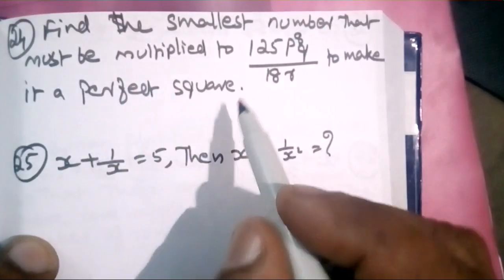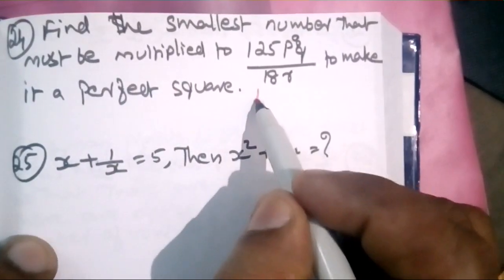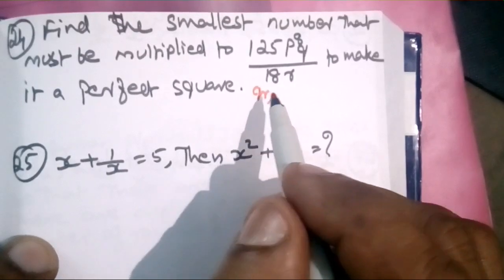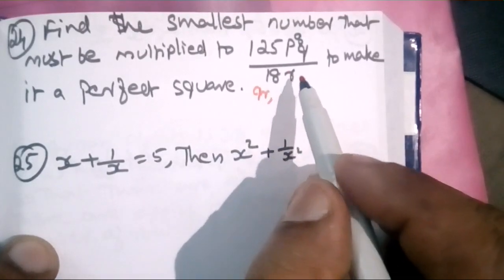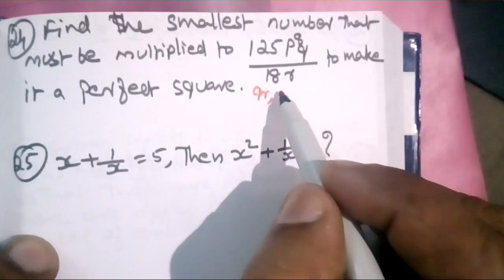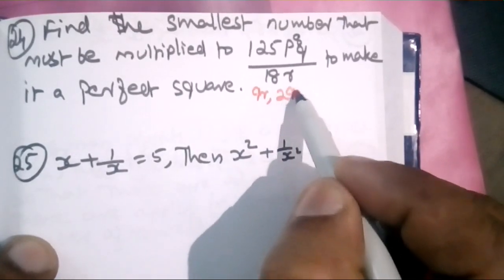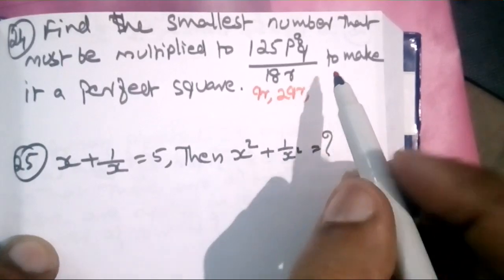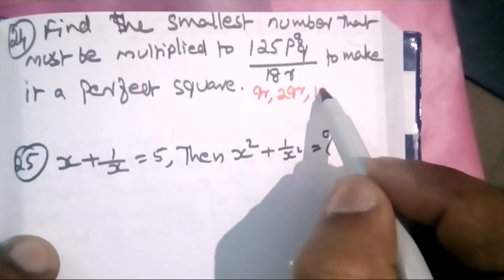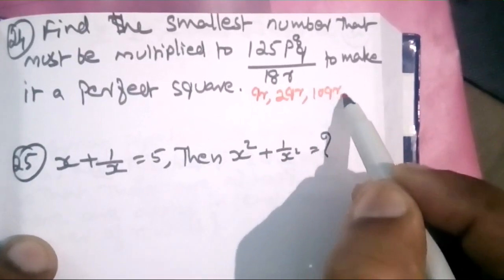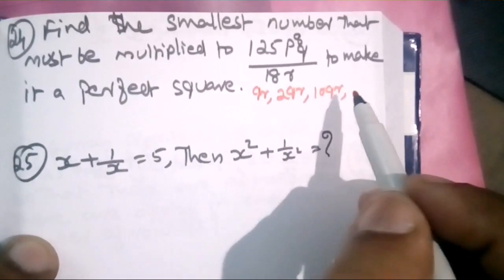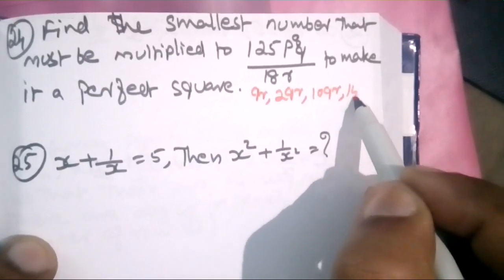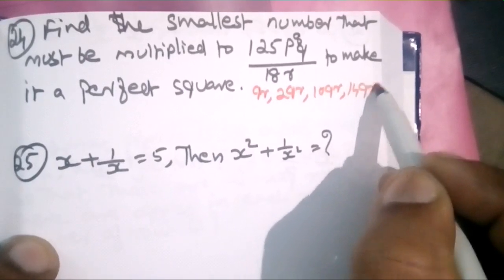The options are 2QR, 2QR, 10QR, and 14QR. We need to find the smallest number to multiply to make it a perfect square.